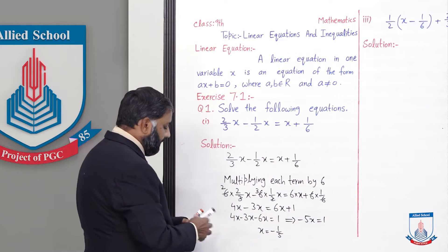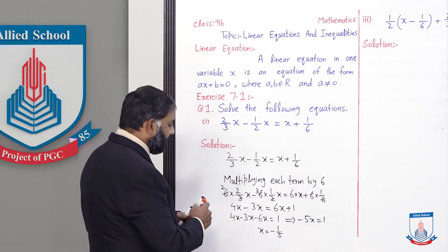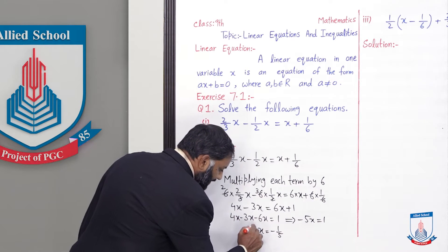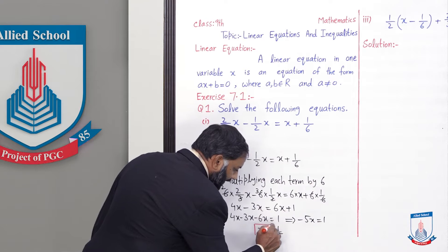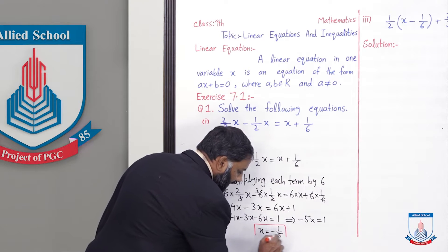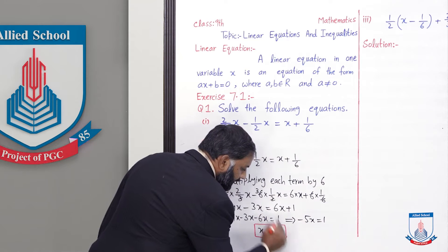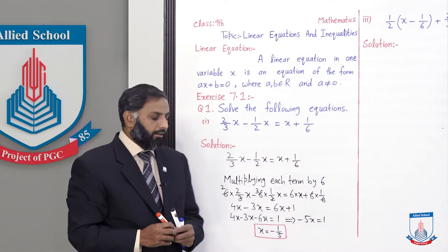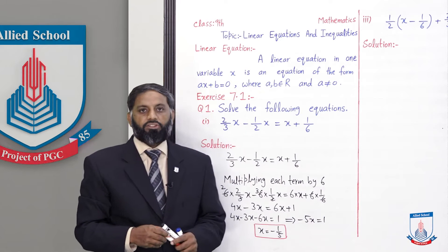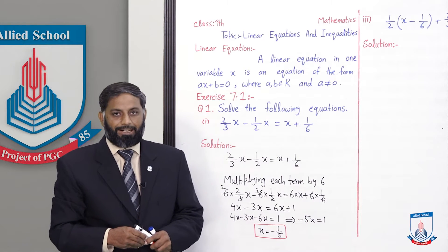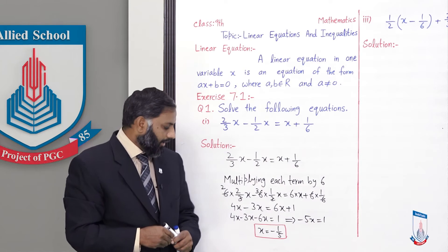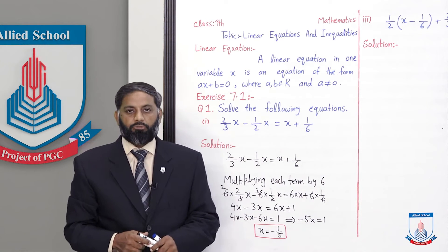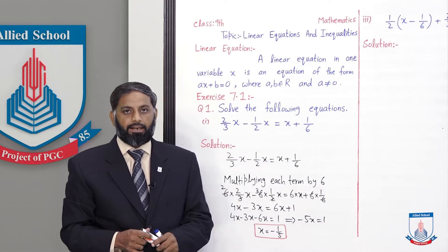So, solve the equation means to find the value of the unknown variable. Is equation mein x tha, jiski value humne minus 1 over 5 find kar li. Ab x ki tamam values ko left side pe ek utha kar lein: 4x minus 3x minus 6x equals 1, giving minus 5x equals 1, so x equals minus 1 over 5.